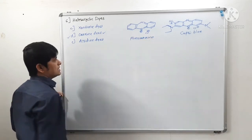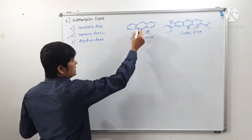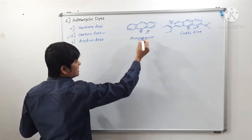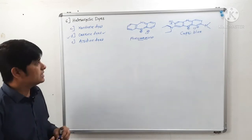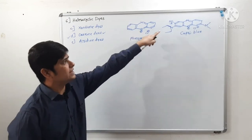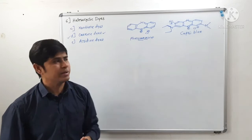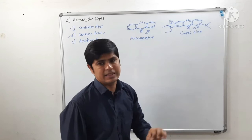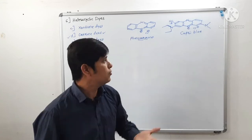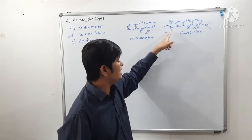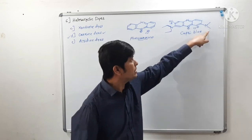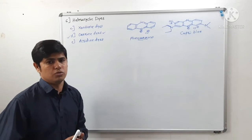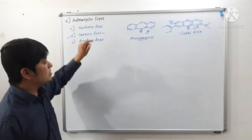This is an example of an oxazine dye, and the core structure is called phenoxazine. There is an oxygen atom — hence 'oxa' — and a nitrogen atom — hence 'aza' — giving us the name phenoxazine. In Capri blue, the C=O or C=N linkage acts as the chromophore, while the diethylamino, dimethylamino, or methyl groups act as auxochromes.